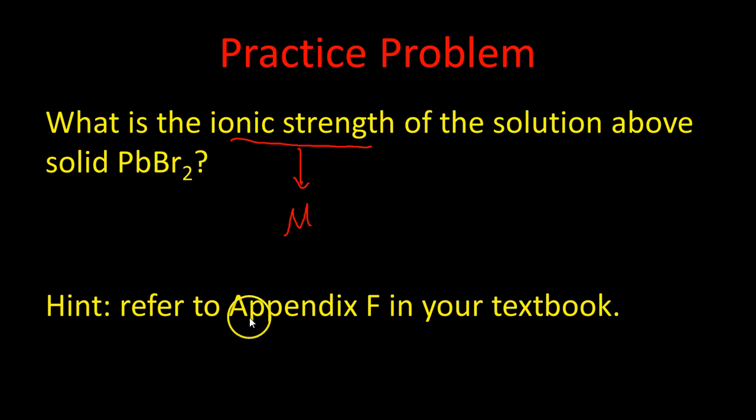So this is ionic strength. So we're looking for μ. It says, hint, refer to appendix F in your textbook. And if you look in that appendix, you're going to find the KSP values. And you're going to find the KSP for lead bromide to be 5.58 times 10 to the minus 6. So this is all the information we need to solve this question. So we need to think about our equilibrium process we have going on here.